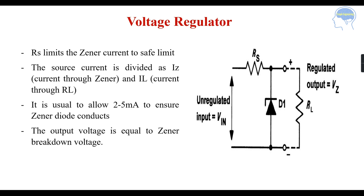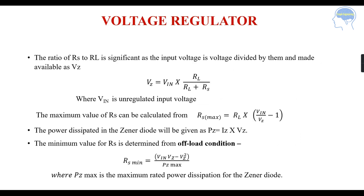It is usual to allow about 2 to 5 milliamps to ensure the Zener diode conducts and the output voltage equals the Zener breakdown voltage. The ratio of the series resistance to the load resistance is significant, as the input voltage is divided by them and made available as the Zener voltage.